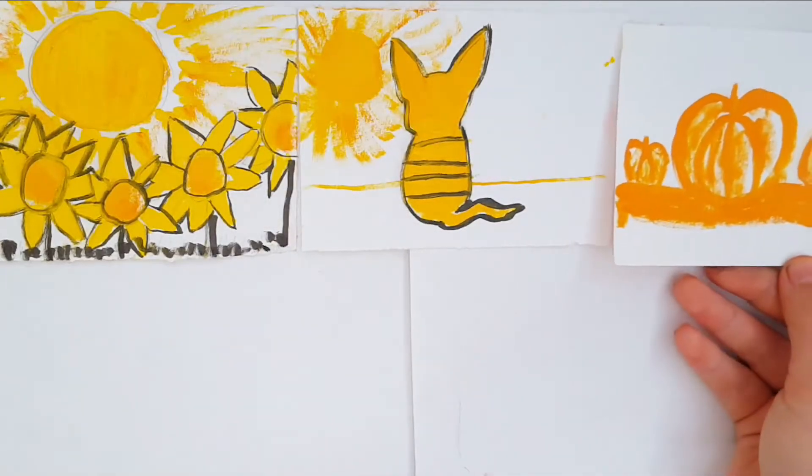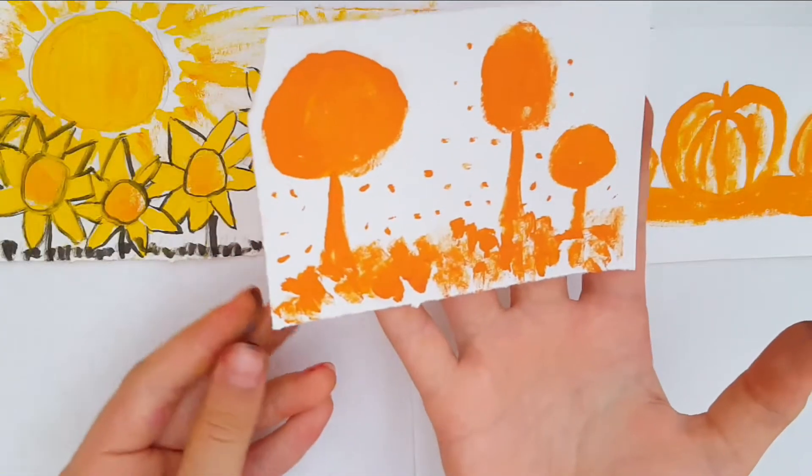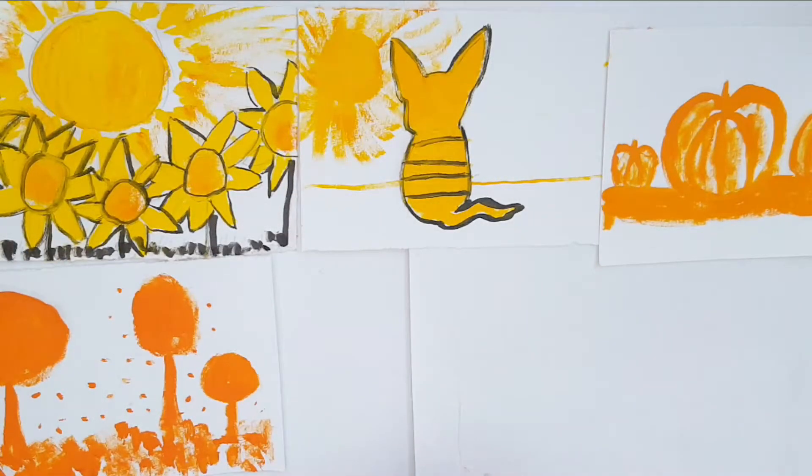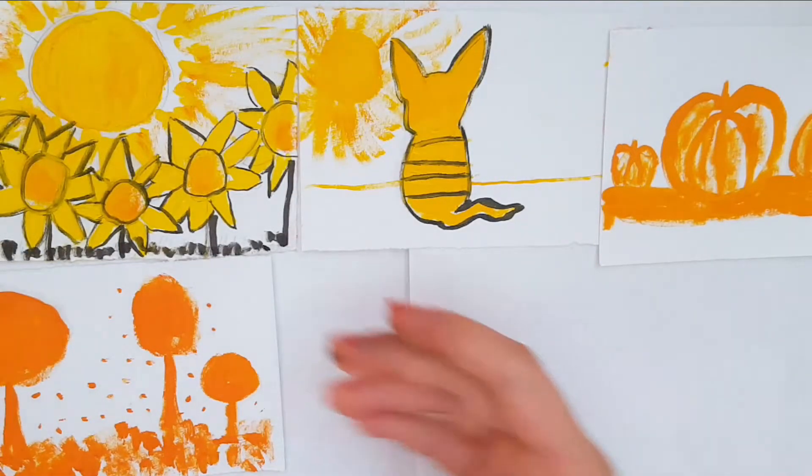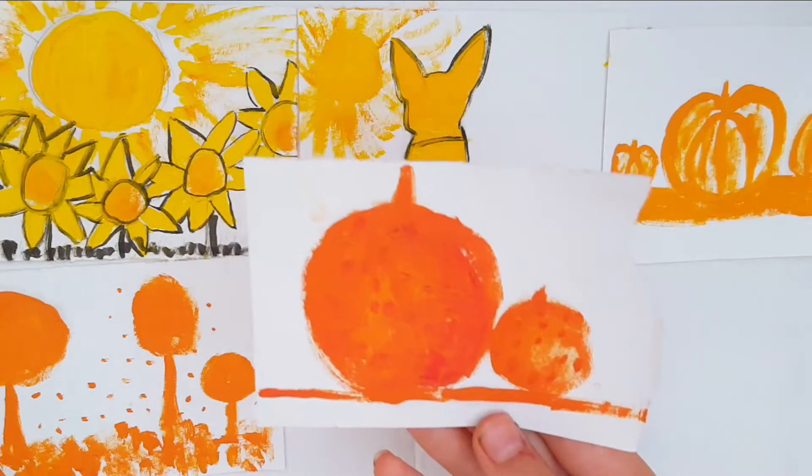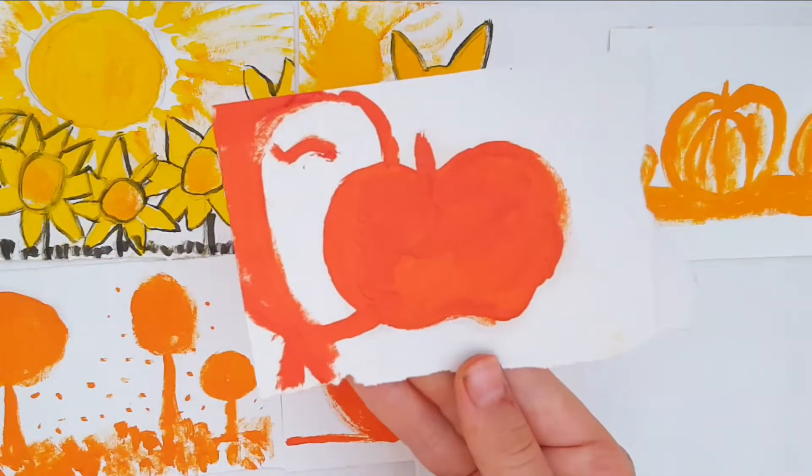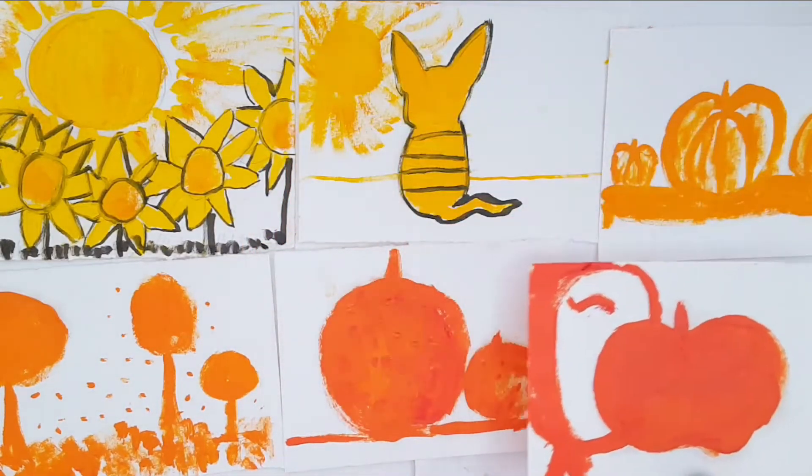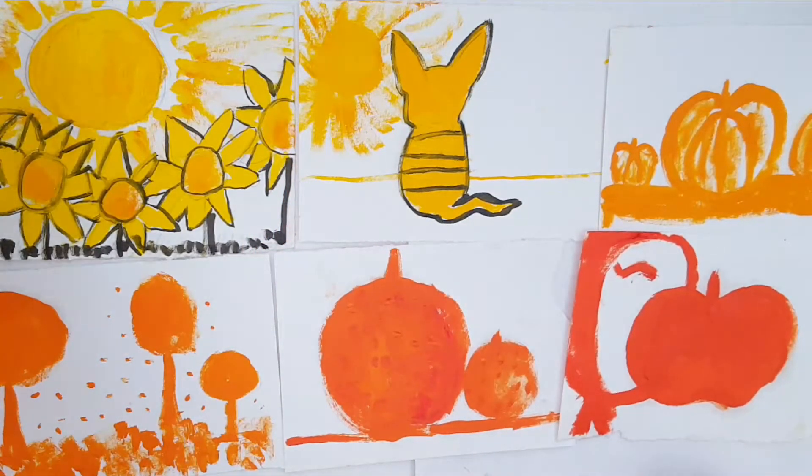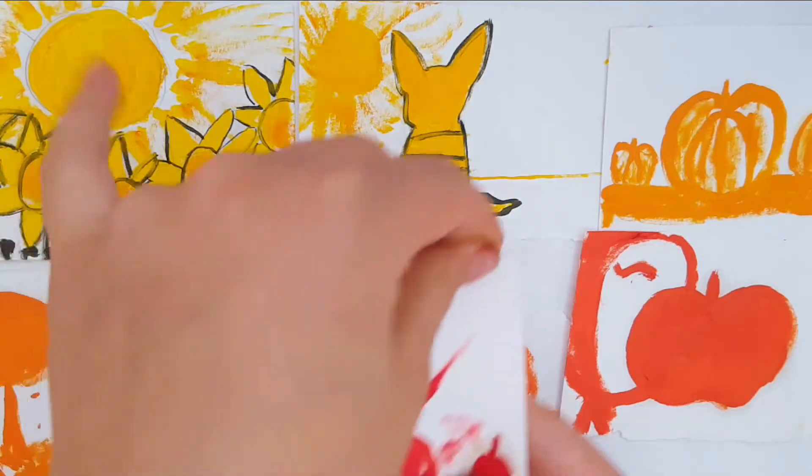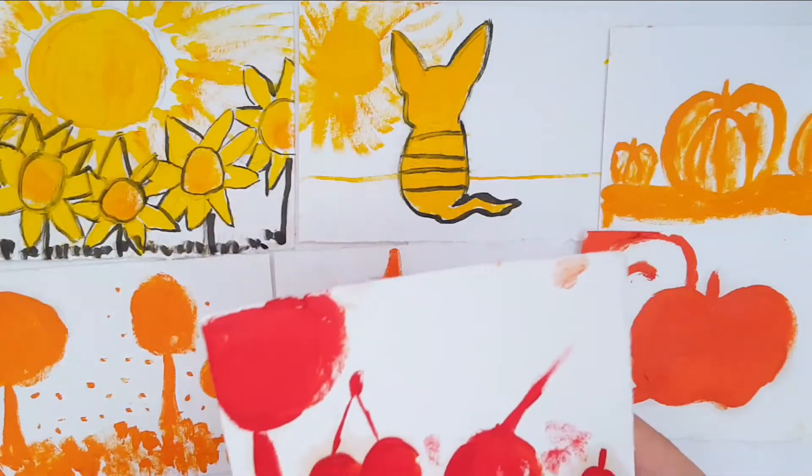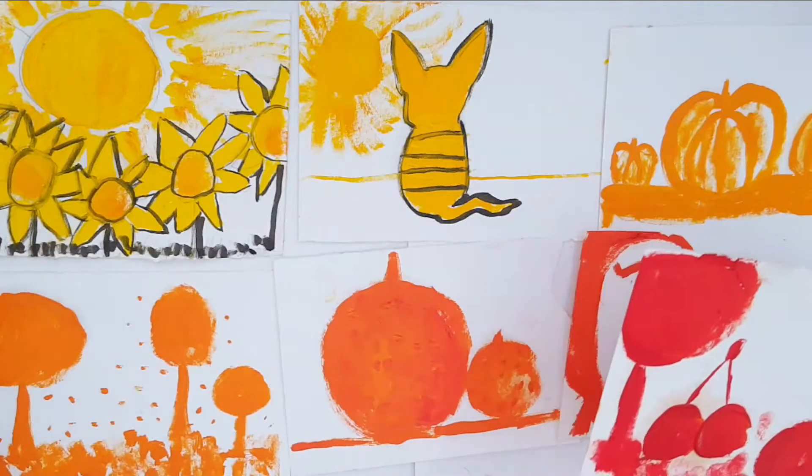Then we have this cat just staring at the sun, probably gonna get blind after this. We have some pumpkins sitting, staring somewhere. Then you have trees which leaves are levitating or falling. Then we have an orange. An apple which a monster is eating. That's actually the red. That's a girl with a red hat.